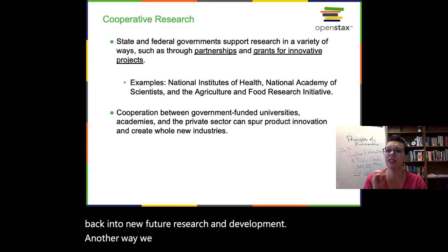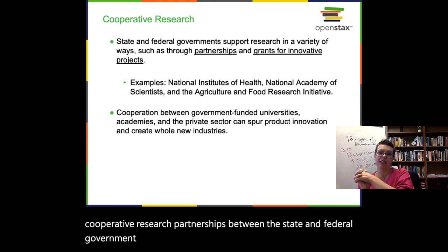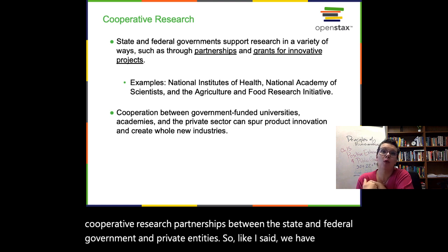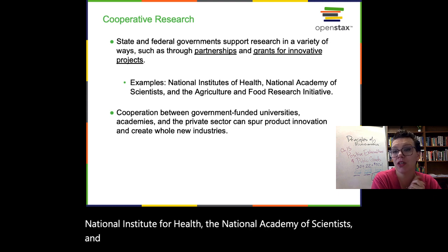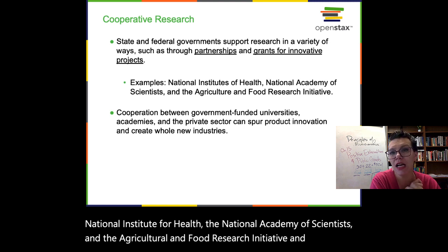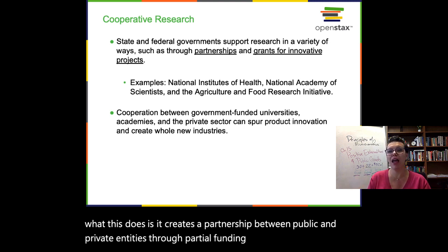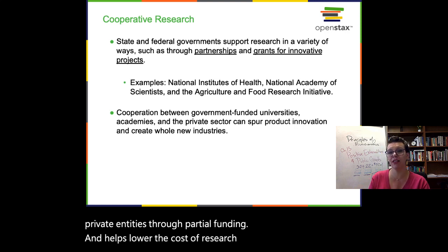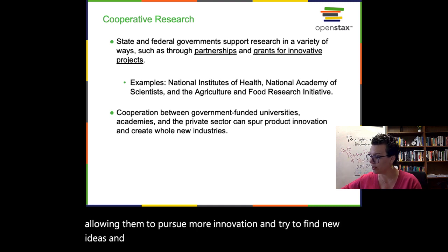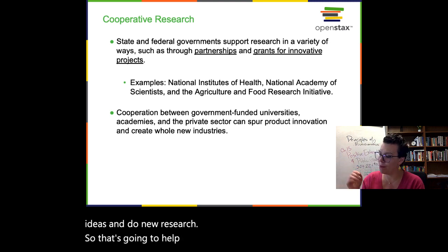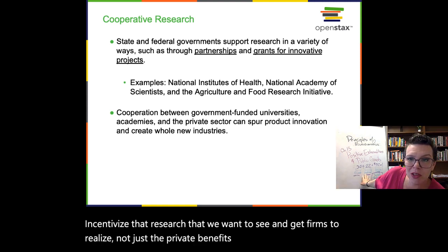Another way we subsidize research and development is through cooperative research — partnerships between the state and federal government and private entities. We have grants from organizations like the National Institute for Health, the National Academy of Scientists, and the Agricultural and Food Research Initiative. Basically, this creates a partnership between public and private entities through partial funding, helping lower the cost of research for the private sector, allowing them to pursue more innovation and find new ideas. That's going to help incentivize the research we want to see and get firms to realize not just the private benefits, but maybe assume some of those external benefits too.